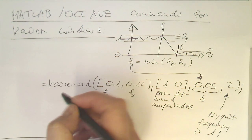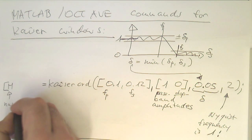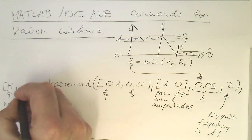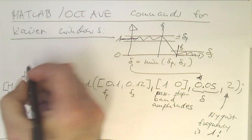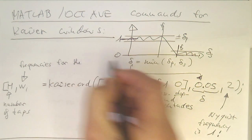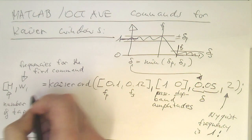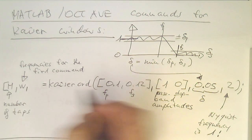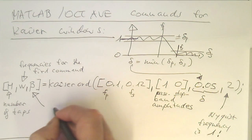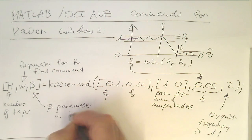What do we get from the kaiserord command? The first output is M — the number of taps. Then we get W — the frequencies for the FIR1 command. The trick is we just feed these into the FIR1 command. And then we get the beta parameter, which is used in the Kaiser window.